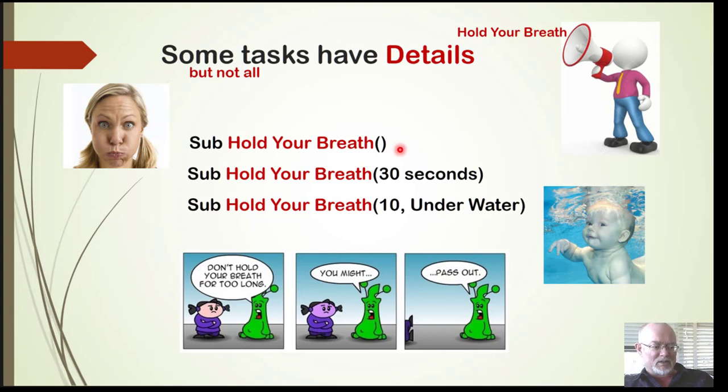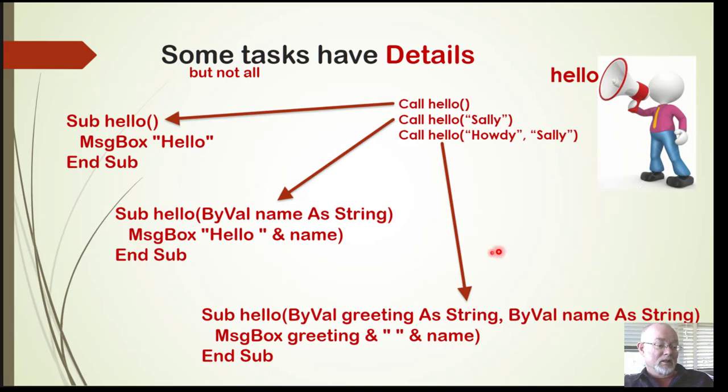You'll notice that subroutines can have zero parameters, just one parameter, or multiple parameters. It just depends on how much information needs to be passed to the subroutine for it to get the job done. This is an example of actual VBA code. You see the first one has no parameters, the second one passes one name down, and the third one passes down the greeting and the name with two parameters in the parameter list.